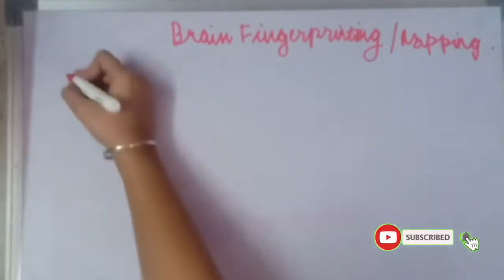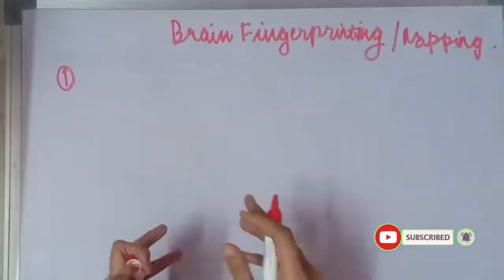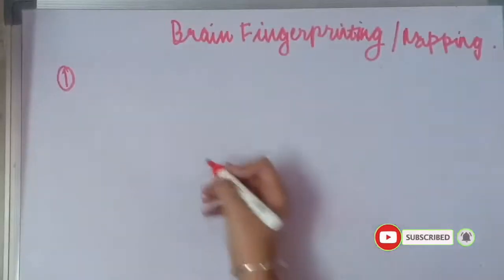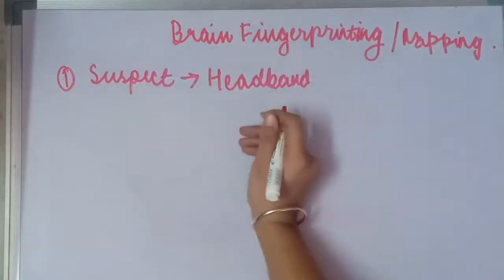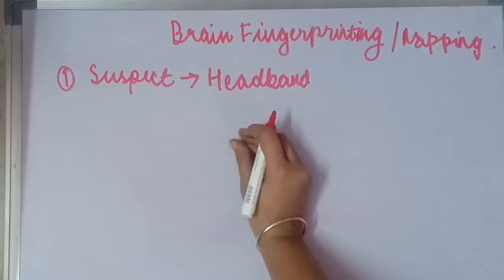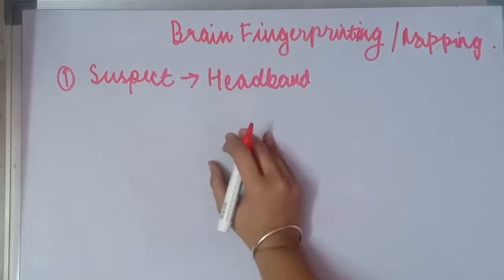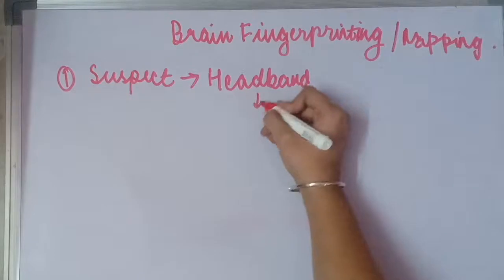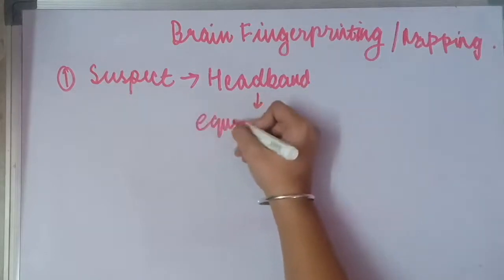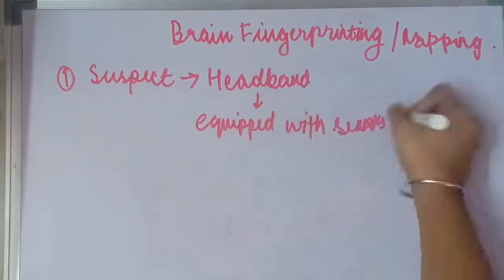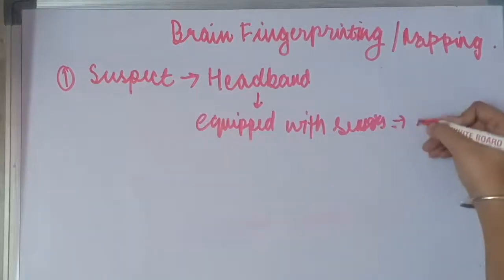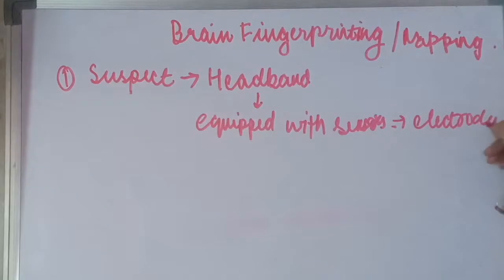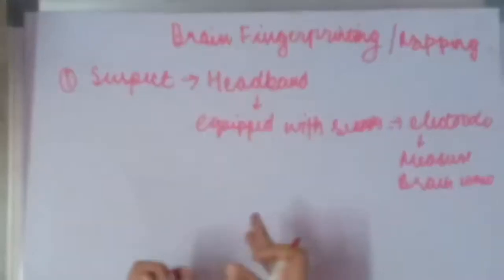Now I'll be telling you different steps that are used. First of all, the person is fitted with a headband, a suspect headband. This is a special kind of headband that is equipped with electrode sensors that will detect the brain wave. This is fit on the head of the person and it has electrodes that measure brain waves.